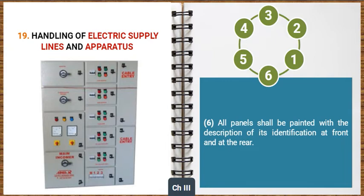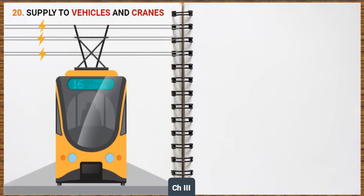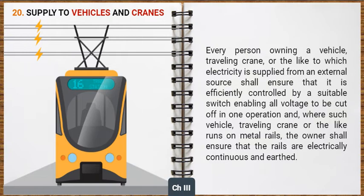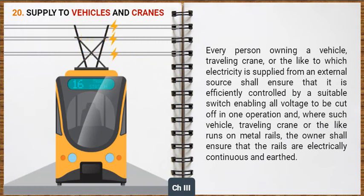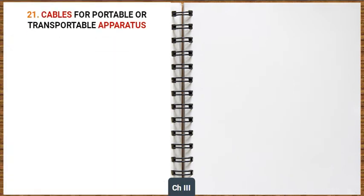Now let's look at the general safety requirements for supply to vehicles and cranes. Every person owning a vehicle, travelling crane or the like to which electricity is supplied from an external source shall ensure that it is efficiently controlled by a suitable switch enabling all voltage to be cut off in one operation. Where such vehicle, travelling crane or the like runs on metal rails, the owner shall ensure that the rails are electrically continuous and earthed.